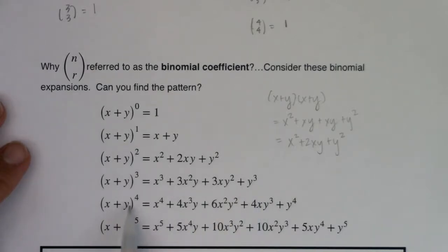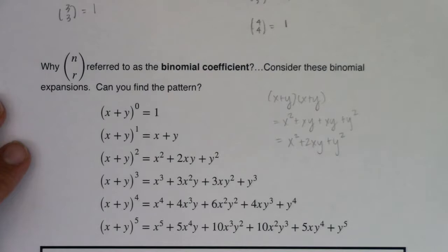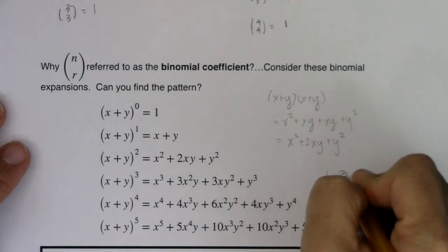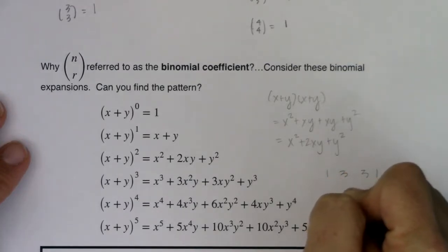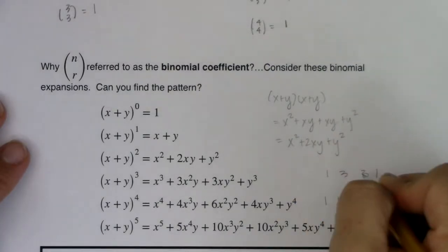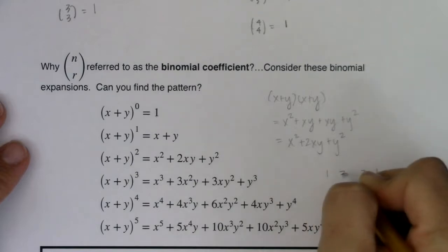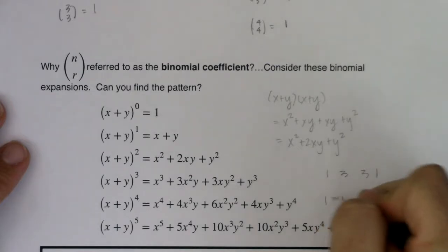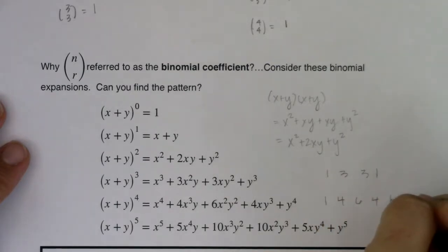Think about x plus y to the fourth — this binomial raised to the fourth power: x to the fourth, 4x cubed y, 6x squared y squared, 4xy cubed, y to the fourth. In example two, I said remember the pattern 1, 3, 3, 1, and remember the pattern 1, 4, 6, 4, 1. And these were the binomial coefficients: 3 choose 0, 3 choose 1, 3 choose 2, 3 choose 3; and 4 choose 0, 4 choose 1, 4 choose 2, 4 choose 3, 4 choose 4.